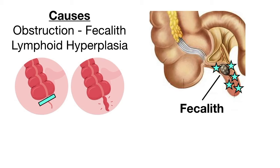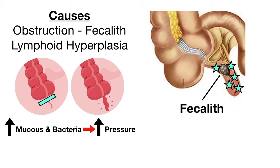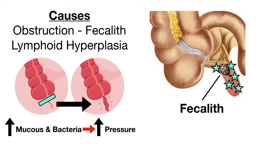The overall concept is that appendicitis is caused by some kind of obstruction. After an obstruction is present, you're going to have increased mucus and bacteria within the appendix. The bacteria multiply and the mucus builds up with nowhere to go, increasing the pressure within the appendix. The increased pressure leads to inflammation, which will compromise blood flow — decreased arterial blood flow to the appendix and increased venous congestion — leading to ischemia.